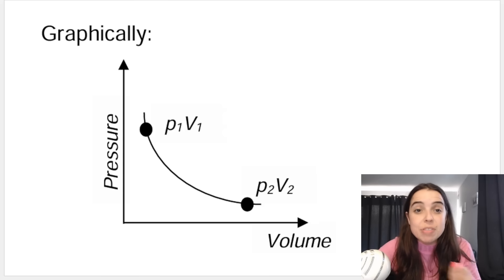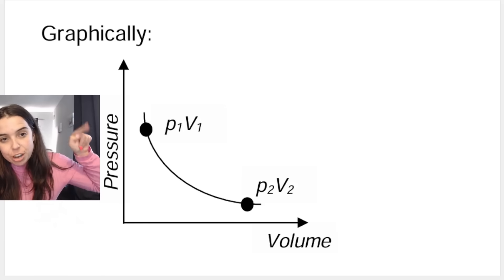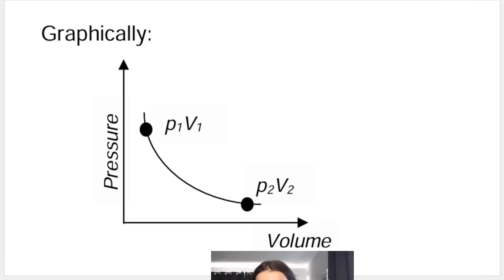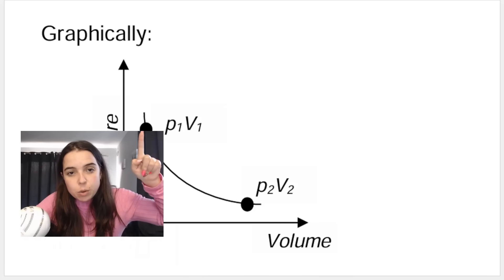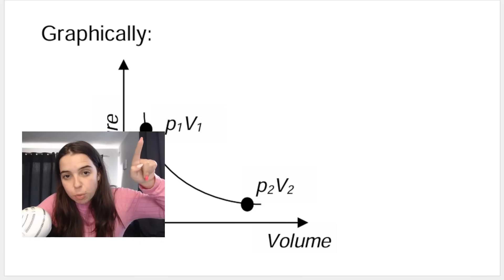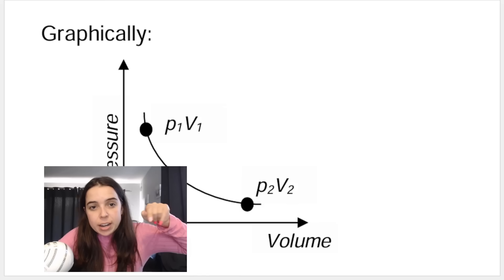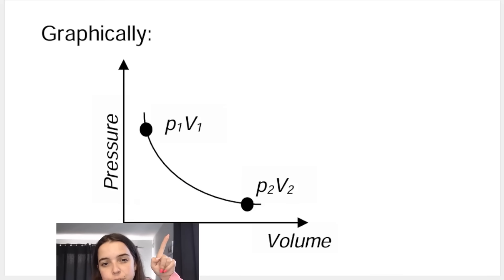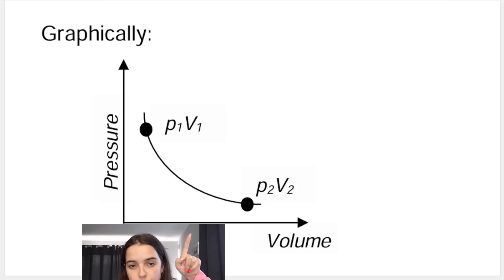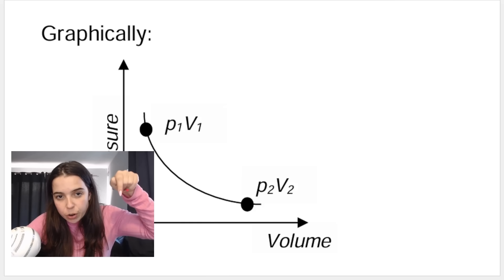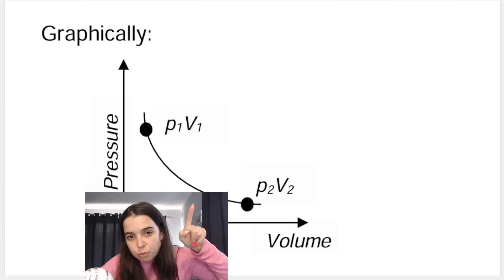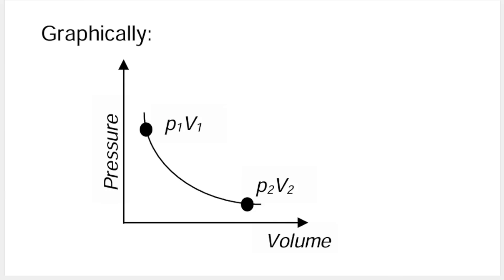Another way to represent that relationship is graphically. You need to be able to draw and interpret a graph. Here we've got pressure on the y-axis and volume on the x-axis. Here's P1 V1, one set of data points from the table. As the volume is increasing, pressure is going down, and we get this inversely proportional curve.